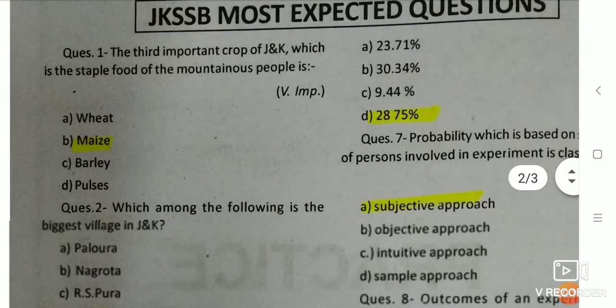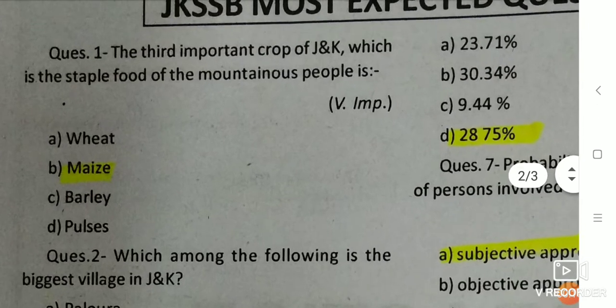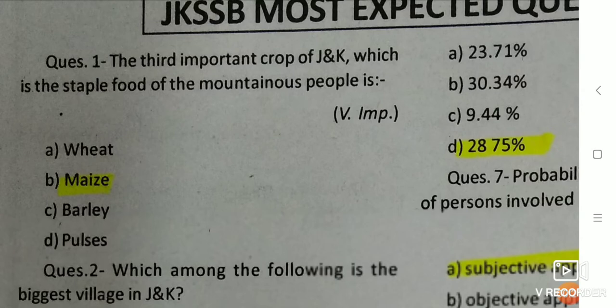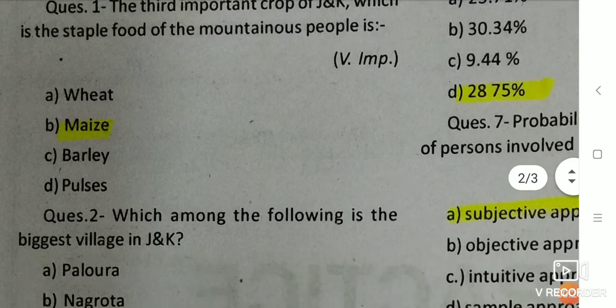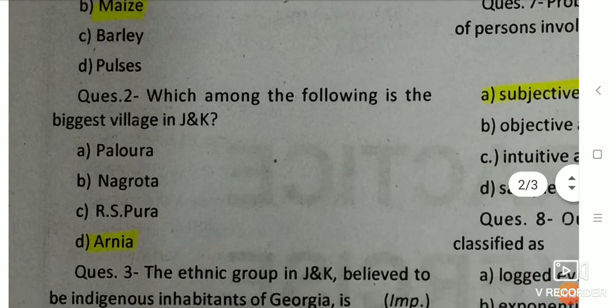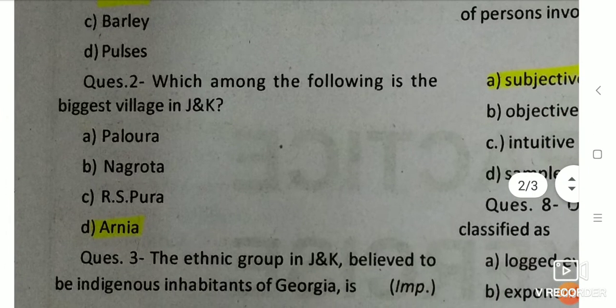Q1: The third important crop of J&K which is the staple food of the mountainous people is — the right answer is Maize. Q2: Which among the following is the biggest village in J&K? The right answer is Arnia.